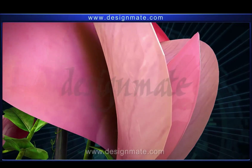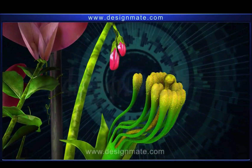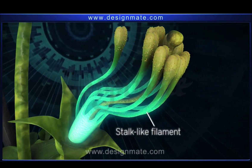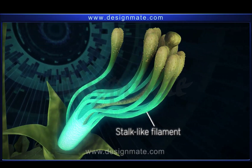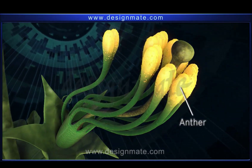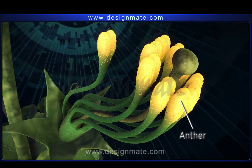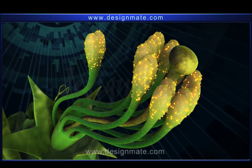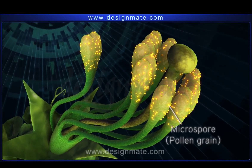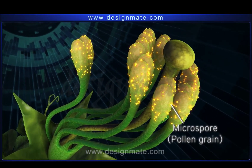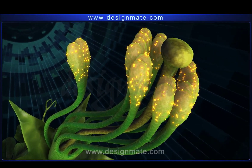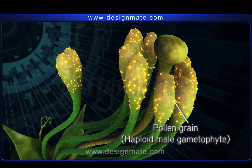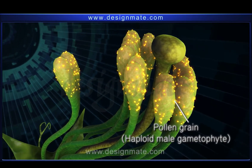The male reproductive structures of a flower consist of stalk-like filaments with pollen-bearing anthers at the anterior end. The anthers produce microspores or pollen grains. It is inside the pollen grain that the haploid male gametophyte develops.